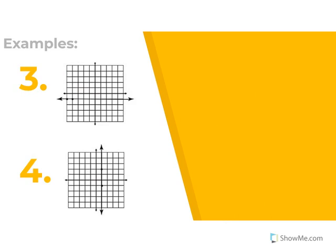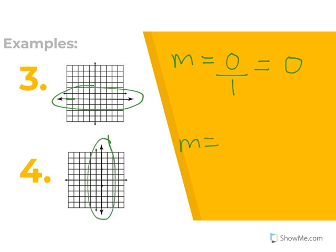Now for some special cases — horizontal lines. If I count from one point to the other on a horizontal line, I didn't go up or down at all, so I moved zero. I only moved over one. Zero divided by a number equals zero, so we have a zero slope. For a vertical line, I went down: 1, 2, 3. But I didn't go left or right at all. You cannot divide a number by zero — that's why it makes it undefined.